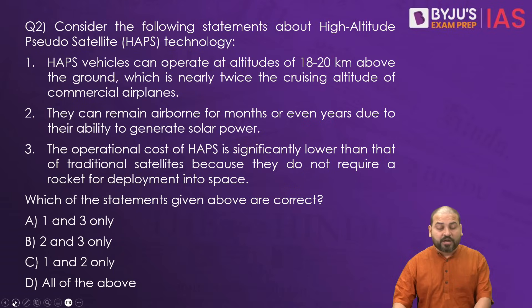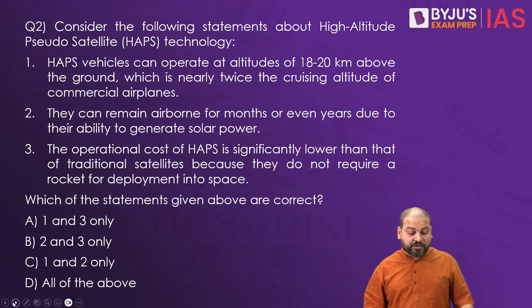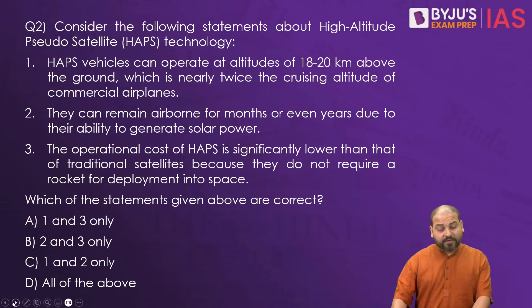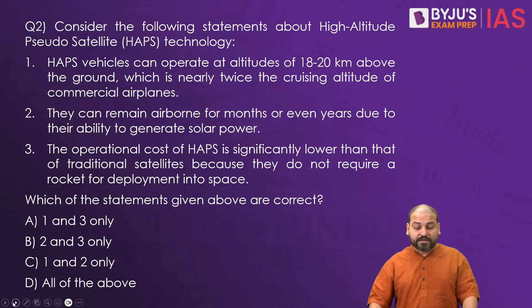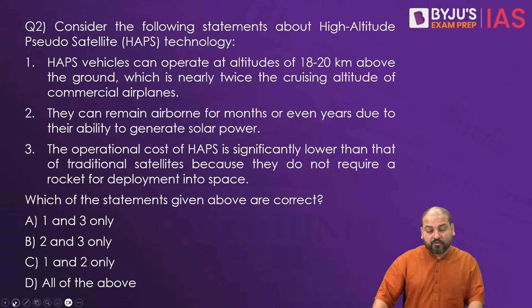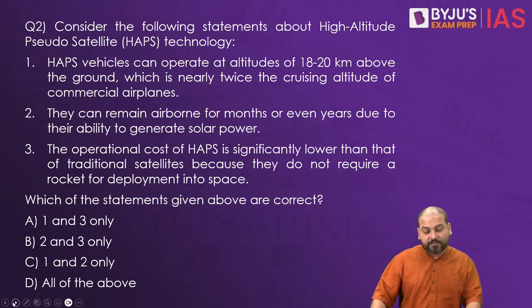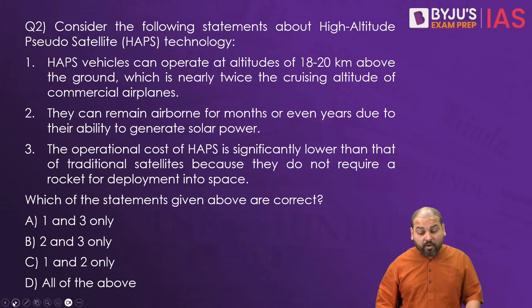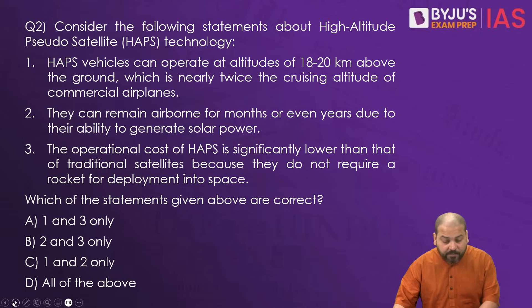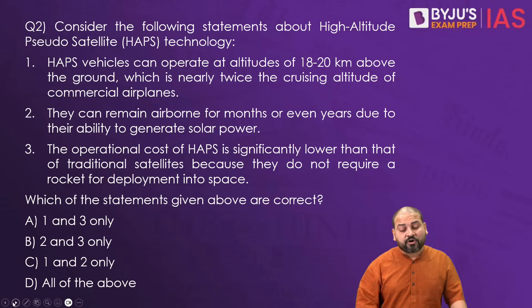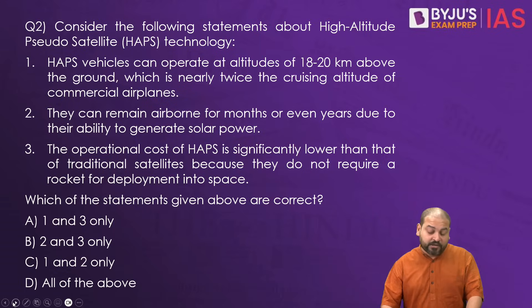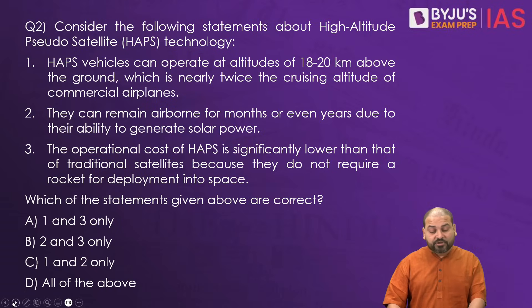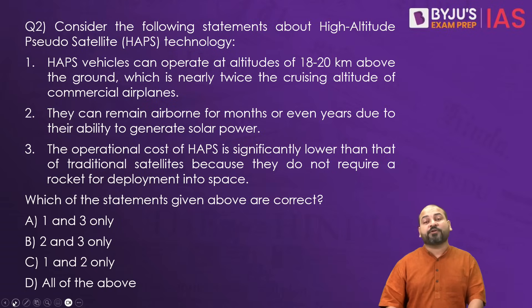Moving to question number two: consider the following statements about high altitude pseudo-satellite HAPS technology. First, HAPS vehicles can operate at altitudes of 18 to 20 kilometers above the ground, which is nearly twice the cruising altitude of commercial airplanes. Number two, they can remain airborne for months or even years due to the ability to generate solar power. Number three, the operational cost of HAPS is significantly lower than that of traditional satellites because they do not require a rocket for deployment into space.